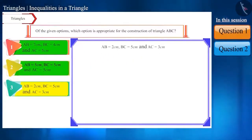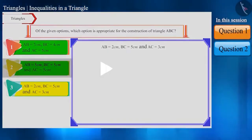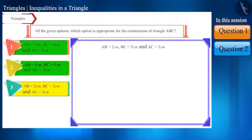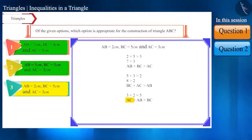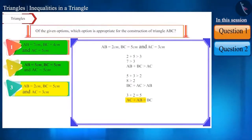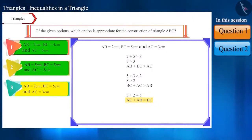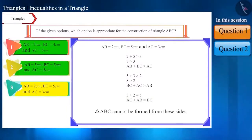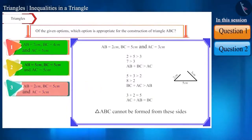Now let's move to the last option. We will repeat the same process — you can pause the video and try to solve it yourself. Here, the sum of side AC and side AB is equal to side BC. Therefore, triangle ABC cannot be formed from these sides, so this option is incorrect.